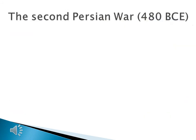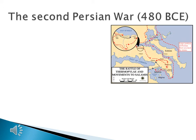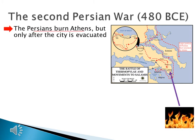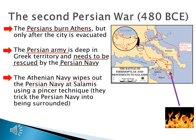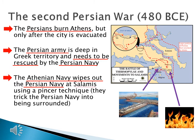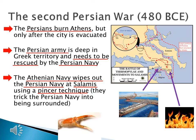Let's look at Part 2 of the Second Persian War, still in 480 BCE. The Persians do burn Athens to the ground, but only after the city is evacuated. The Persian army is now deep in Greek territory and will need to be rescued by the Persian navy. But the Athenian navy wipes out the Persian navy at Salamis using a pincer technique — they trick the Persian navy into being surrounded. That is the end of the Second Persian War.